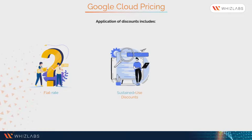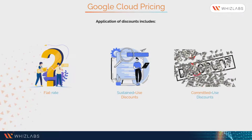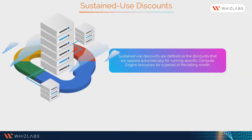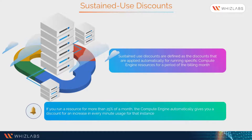Application of discounts includes flat-rate sustained use discounts and committed use discounts. Sustained use discounts are defined as discounts that are applied automatically for running specific Compute Engine resources for a period of the billing cycle. For example, if you run a resource for more than 25% of a month, Compute Engine automatically gives you a discount for every additional minute of usage for that instance.